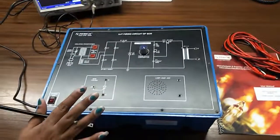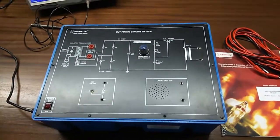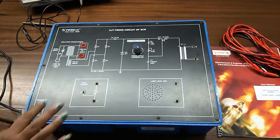Today, we are going to show you our UJT firing circuit of SCR trainer kit, order code is 4650.